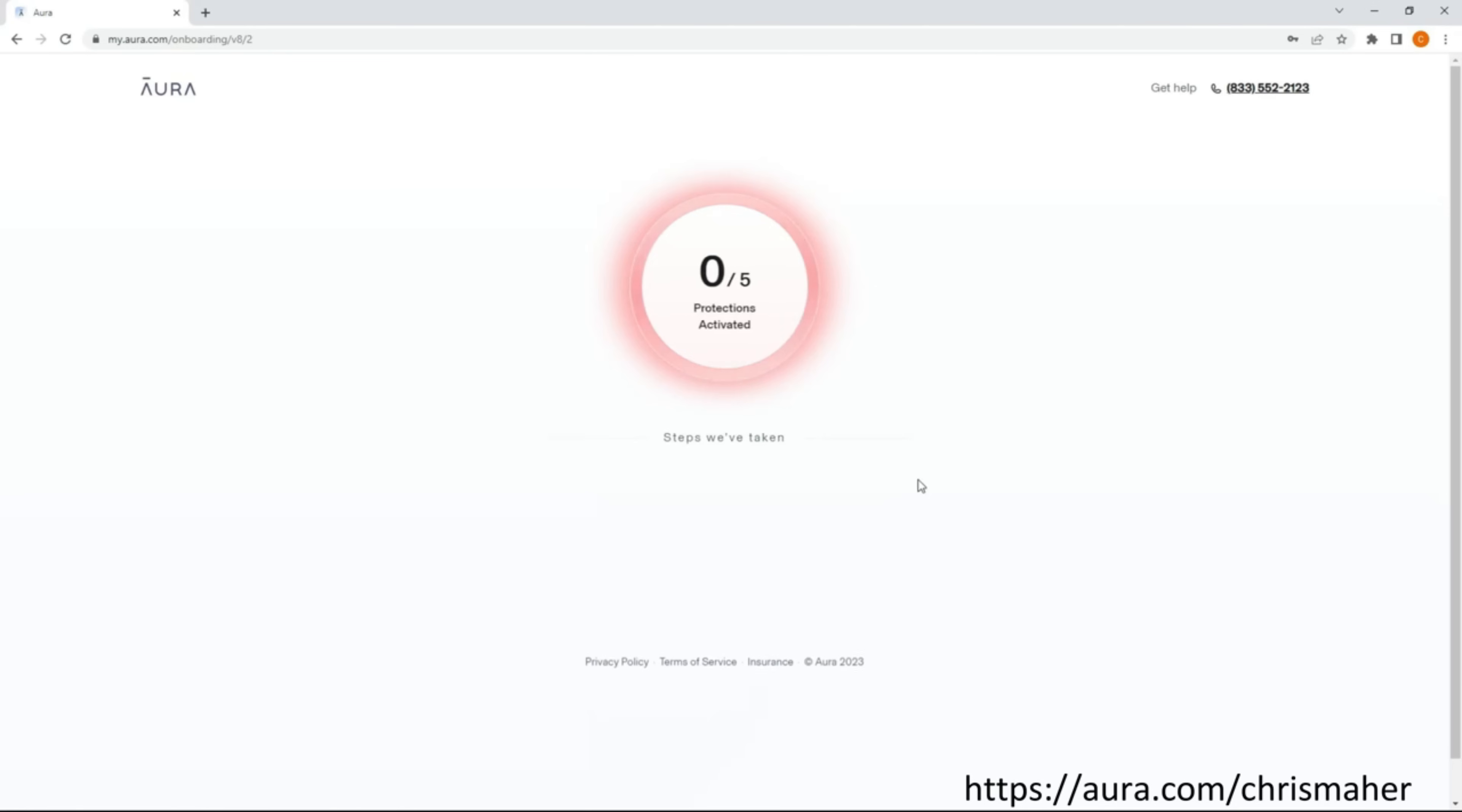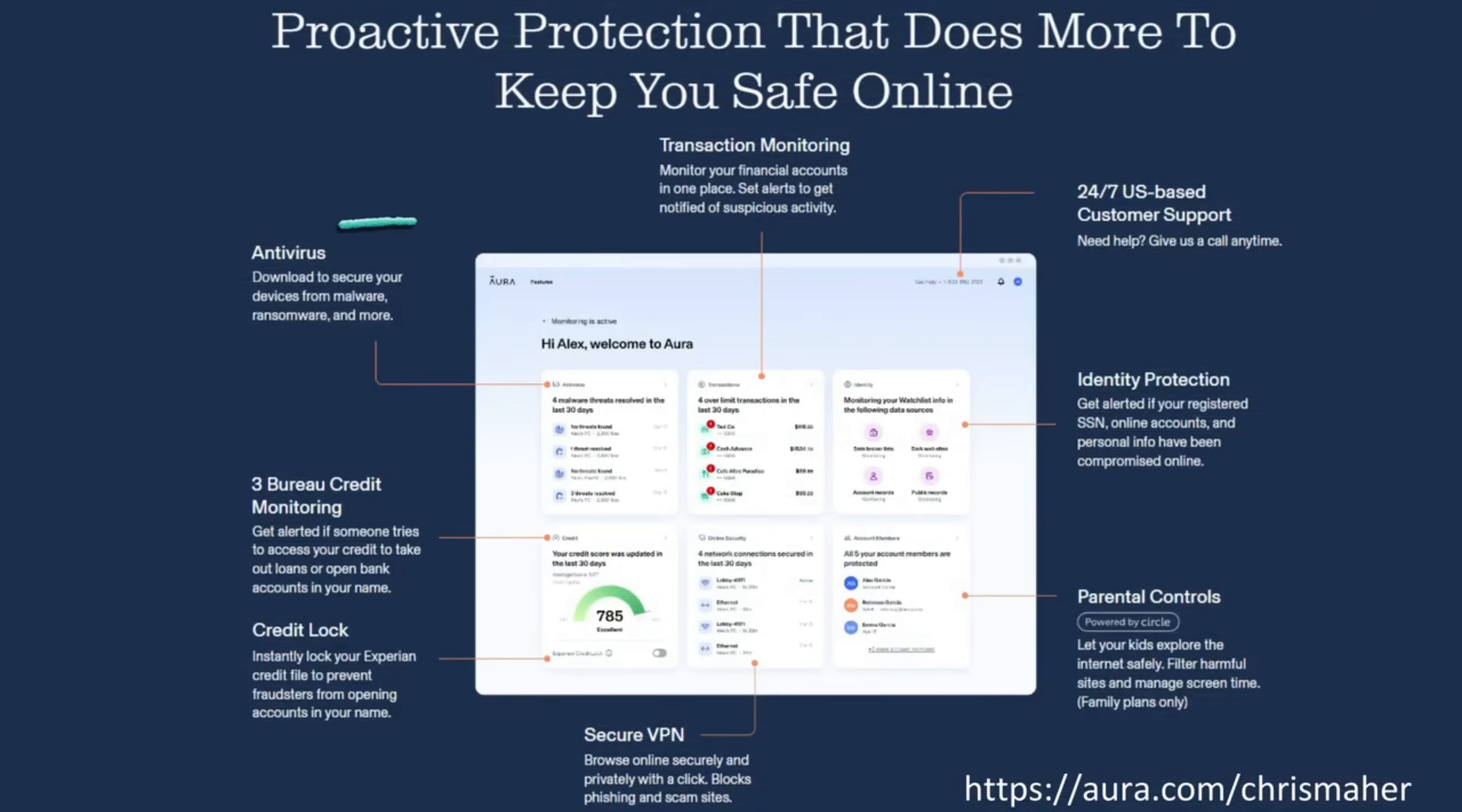Then with one click, Aura sends out a notice to have my information removed from their systems, which they are legally required to do when asked. Their all-in-one platform offers antivirus protection, credit monitoring, credit lock, financial transaction alerts, secure VPN, identity protection, parental controls, 24-7 US-based customer service, and much, much more.